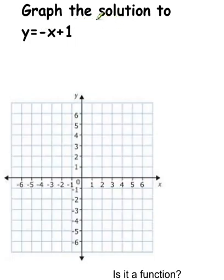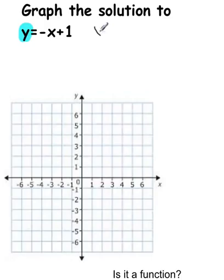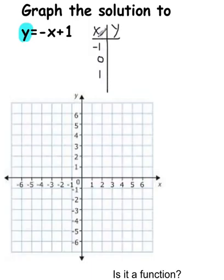Here's our equation: graph the solution to y equals negative x plus 1. Notice y is first — that was our first step. We're going to make ourselves an x and y table. In ordered pairs, x is first and y is second. We said to use negative 1, 0, and 1 for x. Go ahead and write those in right away — I like to go in order from least to greatest so that my answers also go in order.